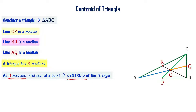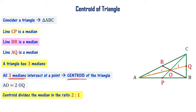Now look at this. I am taking the measure of OQ — OQ length is one unit. And the measure of AO — AO length is two units. So AO is equal to two times OQ. Therefore, the centroid is dividing the median in the ratio of 2 is to 1. Let's verify that with another triangle.